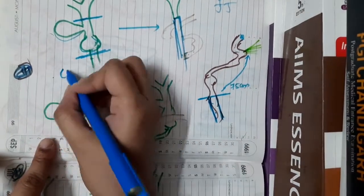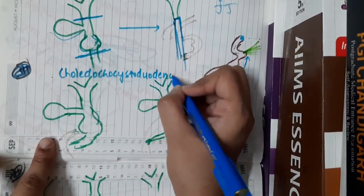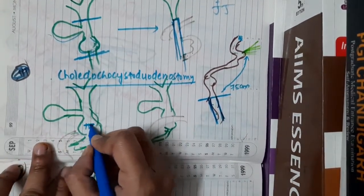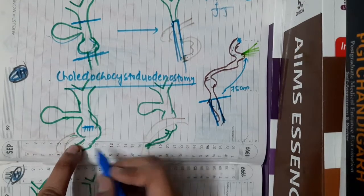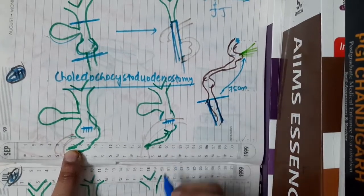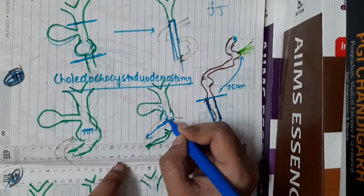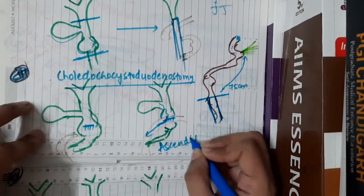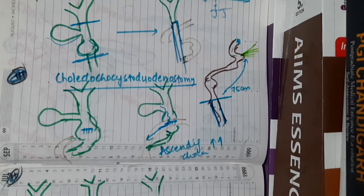The second procedure for Type 1 and Type 2 is choledochocystoduodenostomy. The choledochocyst is opened, the duodenum is also opened, and both are anastomosed so secretions drain through the anastomosis. However, this procedure carries an increased risk of ascending cholangitis.